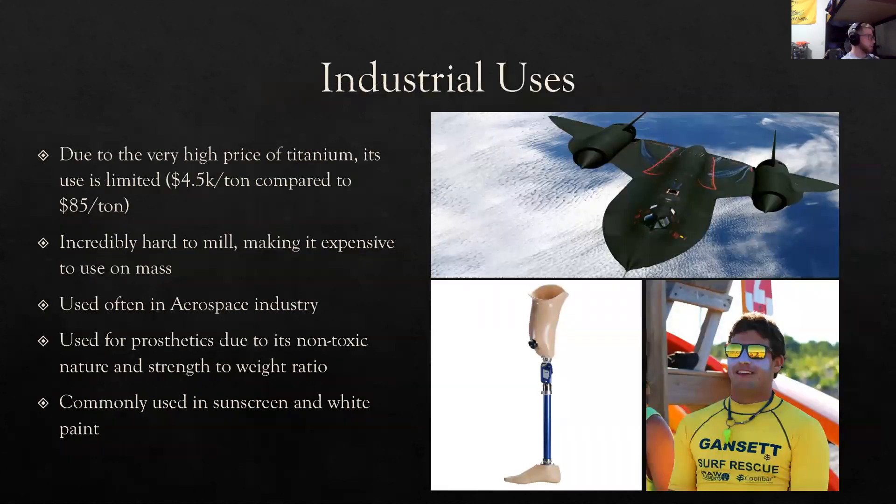So, industrial uses. Due to the very high price of titanium, its wide-scale industrial use is quite limited. One ton of titanium costs roughly $4,500 compared to steel, which costs around $85 per ton. And another big downside for mass use of titanium is that it is incredibly hard to mill, making it incredibly expensive to use on mass and very fidgety and likely to clog up machines.